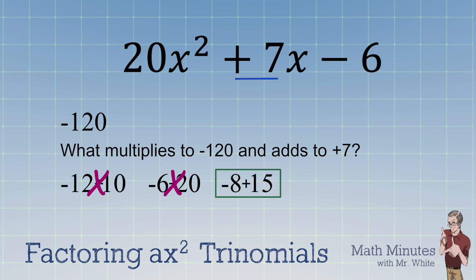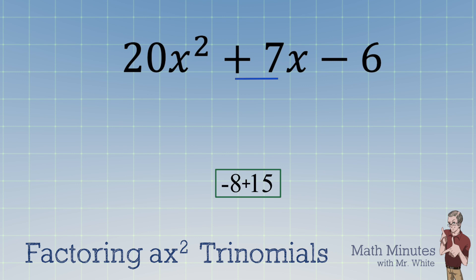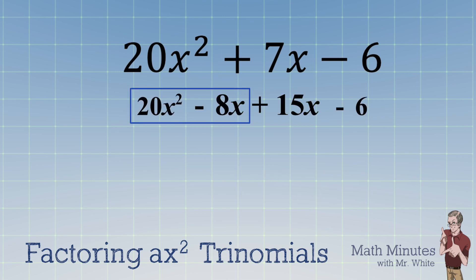So we use that combination to split up the middle term 7x into negative 8x and 15x. Now a lot of students ask me, it really doesn't matter which order you put these in. Believe it or not, we'll still get the same answer in the end. Okay, continuing on.